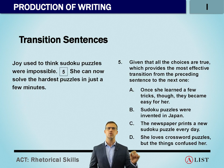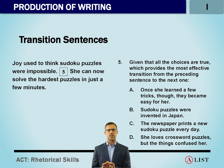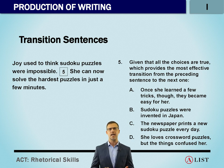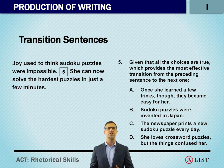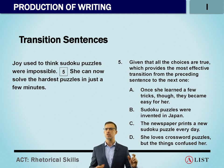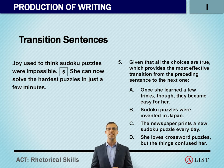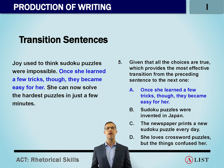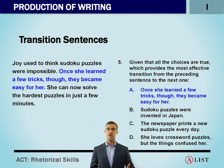Now we move from transition words to sentences that are going to be linked together logically. Joy used to think Sudoku puzzles were impossible. Before deciding what sentence to insert, you have to keep reading — a common mistake is going straight to the answer choices. What happens after? She can now solve the hardest puzzle in just a few minutes. Before she had trouble; now she's really good. The question asks which choice provides the most effective transition. Answer A — 'Once she learned a few tricks though, they became easy for her' — makes a lot of sense. Some event changing her skill set bridges the two sentences perfectly.